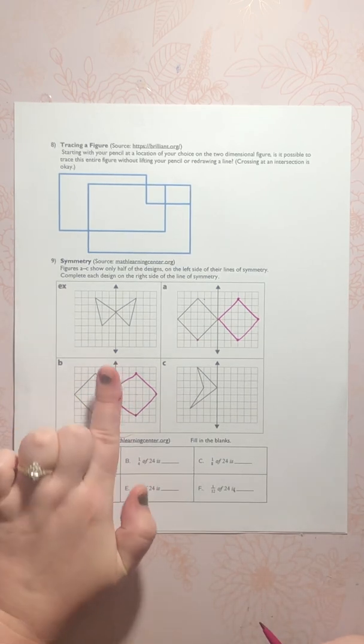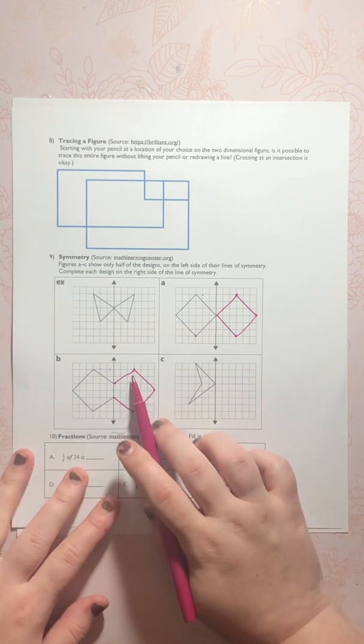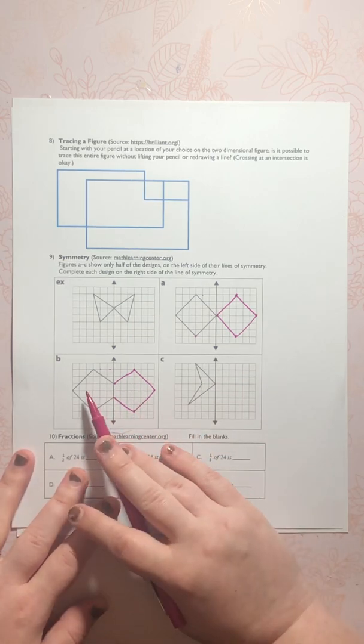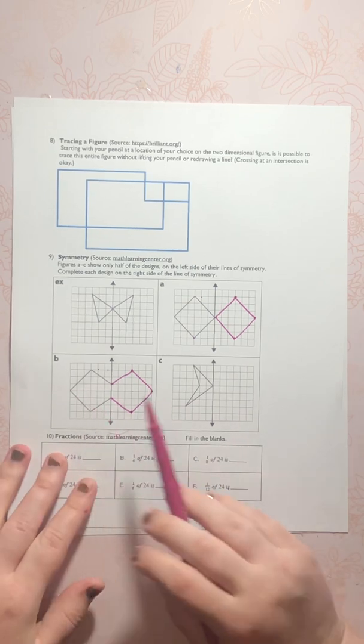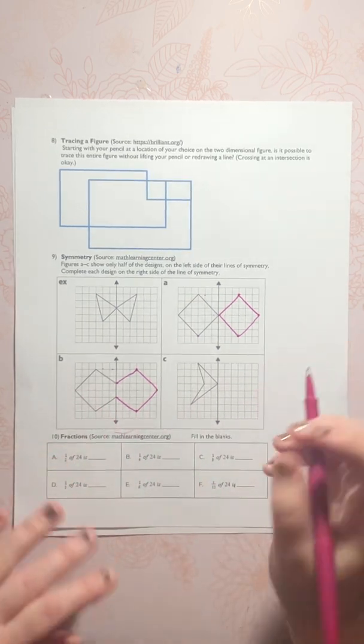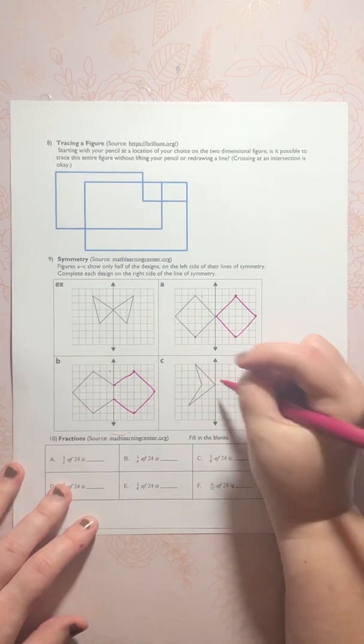If I took this paper and folded it in half, this drawing that I've just done will completely cover this left side, and vice versa. Because the left side would cover the right side as well.